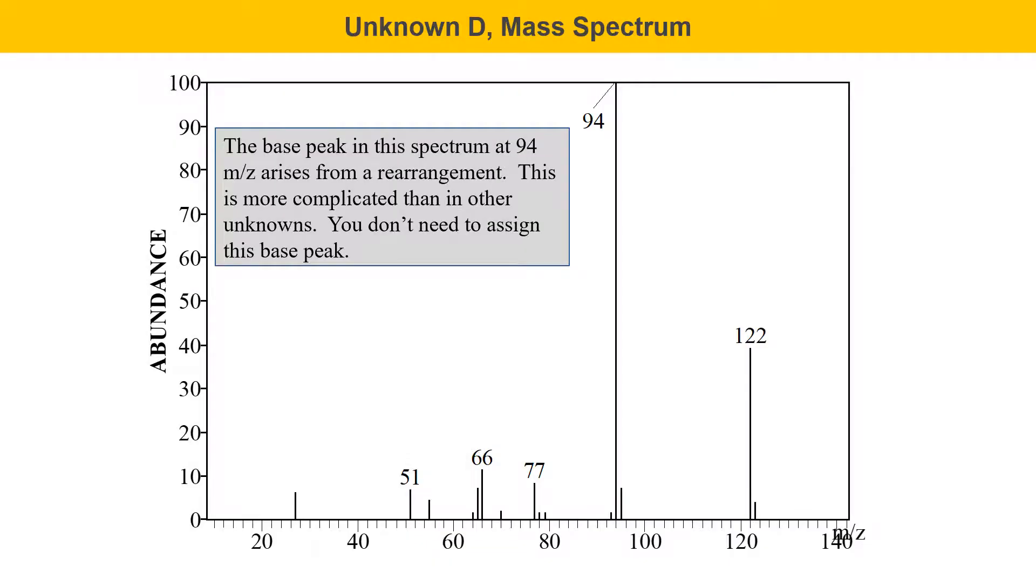Now we're moving on to unknown D. Here's the mass spectrum for unknown D, and here the base peak is at 94. And I need to tell you that in this case, this 94 peak arises from a rearrangement. All the other unknowns in this exercise, B, C, E, F, and G, have base peaks that arise from a simple fragmentation of one bond breaking. This is a little more complicated. It arises from two bonds breaking, and it's not something that we discussed in this class. This is not something that's typically taught in an undergraduate organic class. It's kind of an advanced concept, so don't worry about assigning the base peak for this particular molecule. I will just tell you it's at 94. The molecular ion is at 122, and there's nothing particularly odd about it.